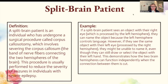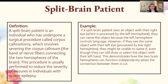Split brain patient. A split brain patient is an individual who has undergone a surgical procedure called corpus callosotomy, which involves severing the corpus callosum — the band of nerve fibers connecting the two hemispheres of the brain. This procedure is usually performed to reduce the severity of seizures in individuals with severe epilepsy. If a split brain patient sees an object with their right eye, processed by the left hemisphere, they can name the object because the left hemisphere controls language. However, if they see the same object with their left eye, processed by the right hemisphere, they might be unable to name it, even though they can still draw or select the object with their left hand. This demonstrates how the two brain hemispheres can function independently when the connection is cut.